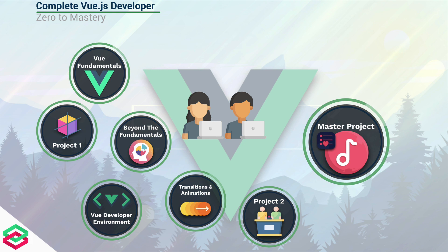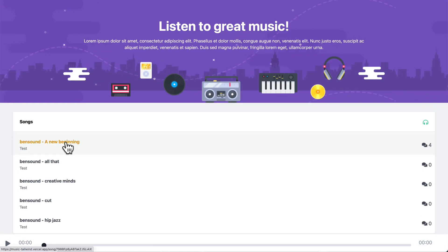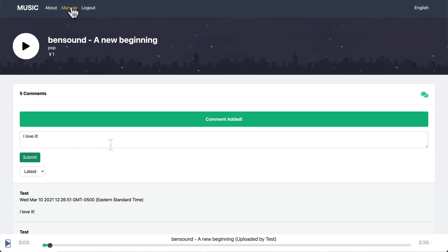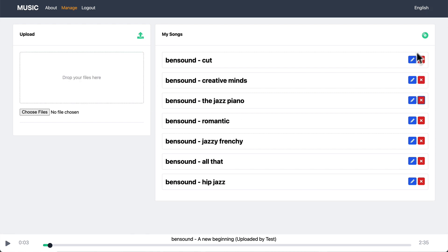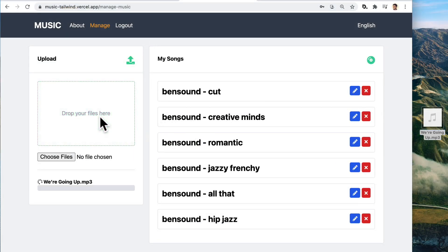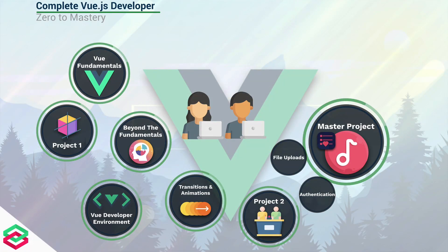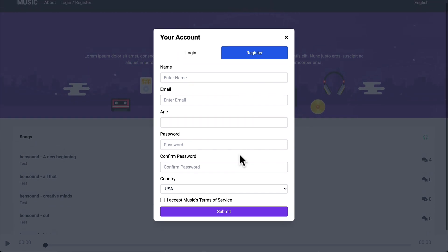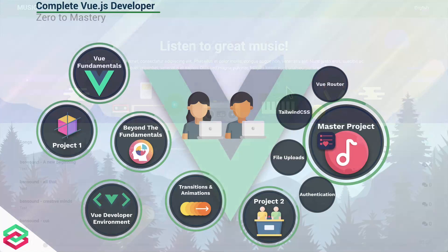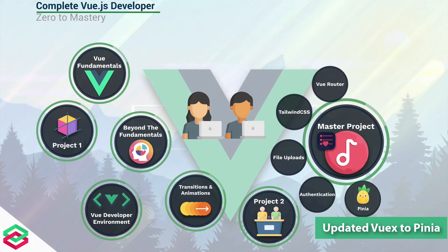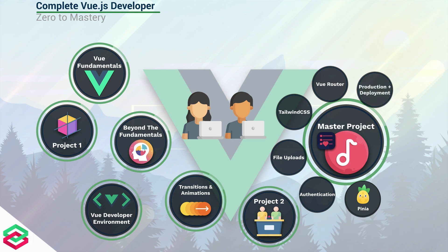This is the exciting part of the course. We made this a big chunk because if you want to get a job as a Vue developer, you need to be able to build large-scale applications. So we're going to build a big music project, kind of like Spotify or SoundCloud. We're going to learn all the top techniques and tools you'll encounter in the real world — file uploads, authentication, Tailwind CSS, Vue Router, Vuex for state management, and how to deploy our apps to production with a nice workflow.